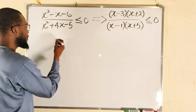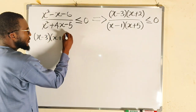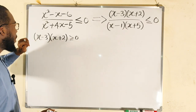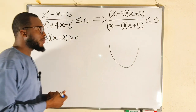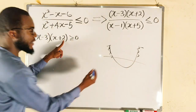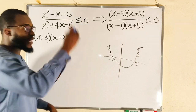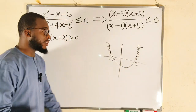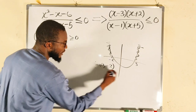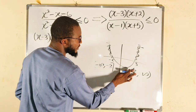The first condition is when the numerator is positive. Using the factorized version, we have (x minus 3)(x plus 2) greater than or equal to zero. This is an open-up parabola, and anything greater will be on the outer legs. Assuming it crosses at negative 2 and positive 3 — those are the roots — the solution is where y is positive, which is from negative infinity to negative 2 and from 3 to positive infinity.